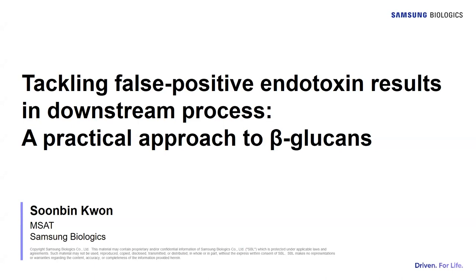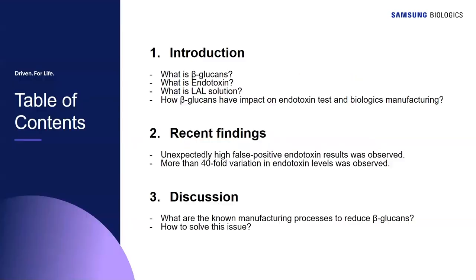I'm Sunbin Kwan from Samsung Biologics, and I'm a senior scientist in MSAT. We are experiencing downstream process tech transfer. Today, I'll be presenting recent case studies on how to tackle false positive endotoxin results in downstream process. We will also discuss the impact of beta-glucans on biologics manufacturing and how to mitigate their impact. I will introduce four key items: beta-glucan, endotoxin, LAL solution, and how beta-glucans can impact endotoxin testing and biologics manufacturing. I will also share unexpected issues we faced recently in endotoxin testing, present the investigation and root cause, and share known manufacturing processes to reduce beta-glucans and solve the issues.